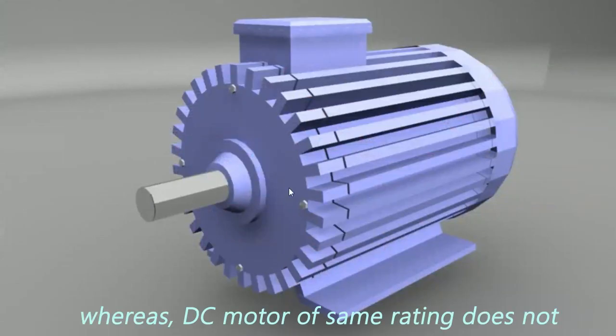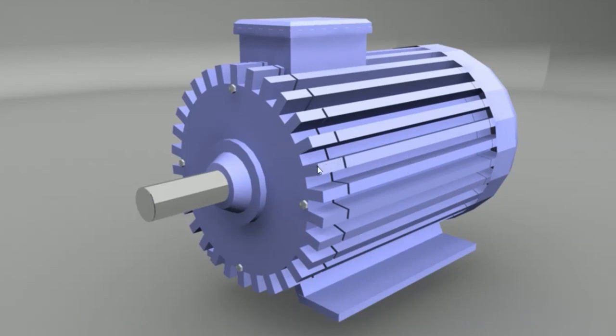That's why the frame of induction motor consists these kinds of strips. Whereas, in case of DC motor of same rating, does not.